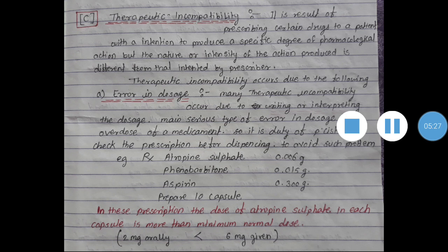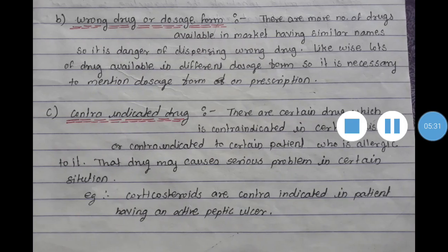The next cause due to which therapeutic incompatibility occurs is wrong drug or dosage form. As you know, there are numerous drugs available in the market having similar names. Due to the similar names, there is confusion about which drug to prescribe. So wrong drug or dosage form is one of the reasons due to which therapeutic incompatibility occurs.